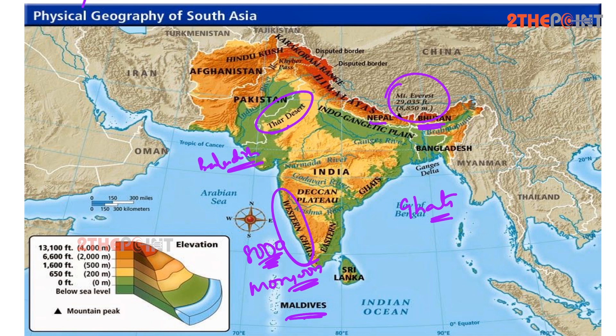The Western Ghats average around 3,000 feet and are home to an extensive range of biodiversity. The Eastern Ghats are not as high as the Western Ghats but have similar physical qualities. The Ghats provide a habitat for a wide range of animals and are also home to large coffee and tea estates.